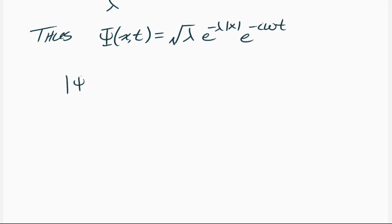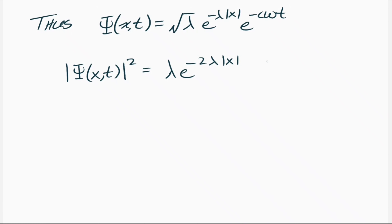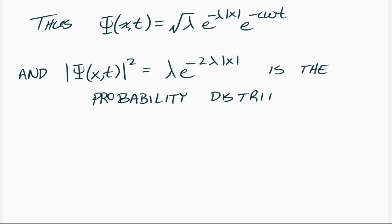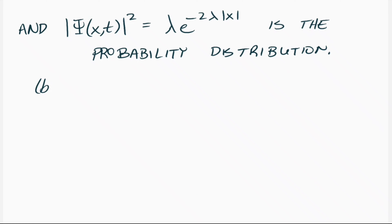By Born's interpretation of quantum mechanics, the probability distribution is given by the wave function squared. So |psi(x,t)|² equals λ times e to the negative 2λ|x|. The time-dependent portion goes away when squaring, just as it did during integration, and this expression is the probability distribution.